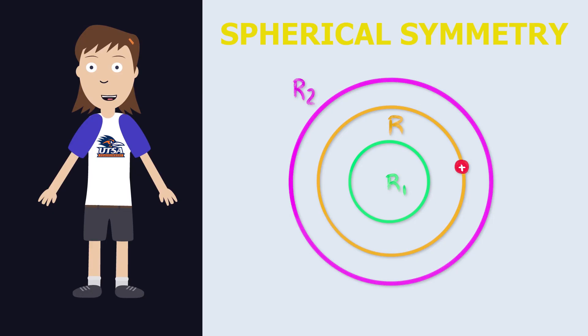In spherical symmetry, the magnitude of the electric field is the same at any point and if there is an electric field, it must point inwards or outwards.